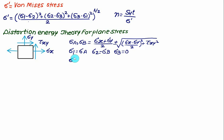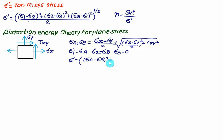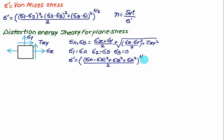The von Mises stress sigma prime for plane stress is derived by substituting sigma_1 = sigma_a, sigma_2 = sigma_b, and sigma_3 = 0 into the general formula. The terms become: (sigma_a - sigma_b)², (sigma_b - 0)² = sigma_b², and (0 - sigma_a)² = sigma_a², all summed and divided by 2 under the square root. This gives the von Mises stress for the plane stress case.